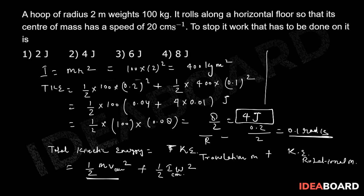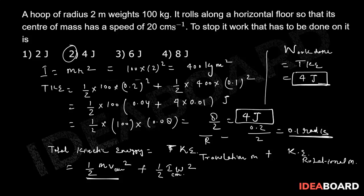So the total kinetic energy is 4 joules. As established earlier, the work done to stop the hoop equals the total kinetic energy, which is 4 joules. Therefore, option number 2 is the correct choice.